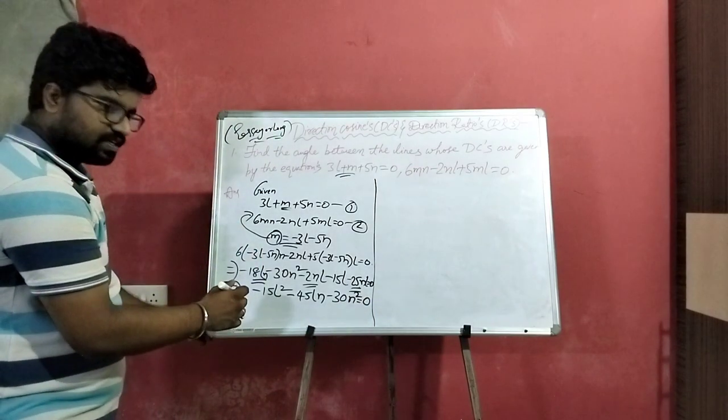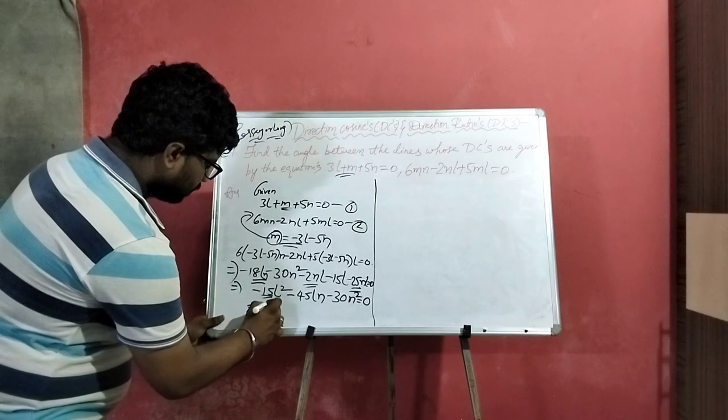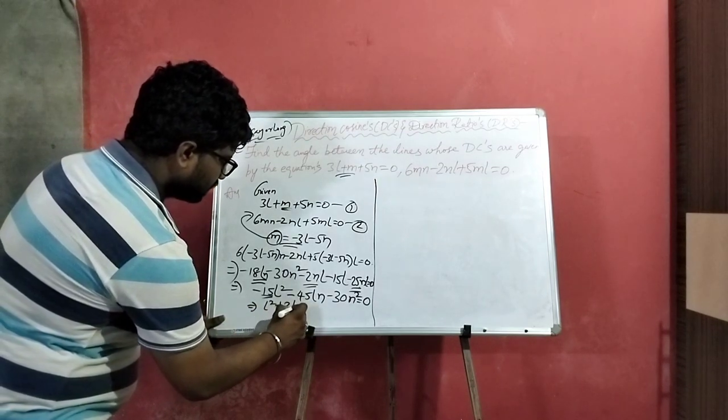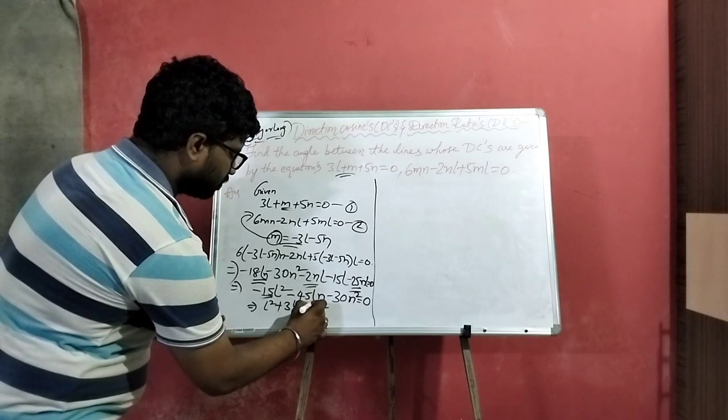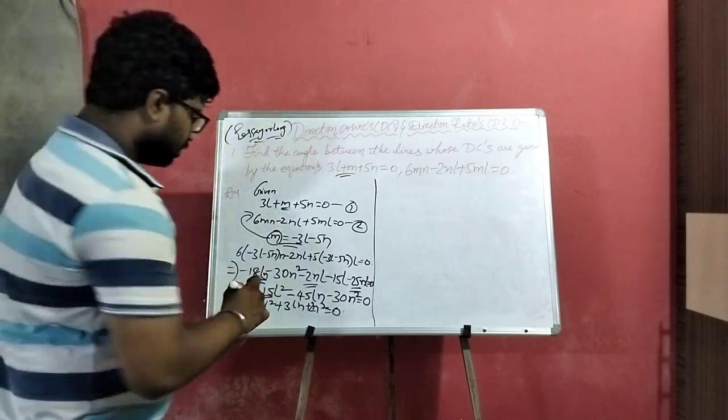27 plus 18 is 45NL and 30N squared. Remove and divide by 15, we get